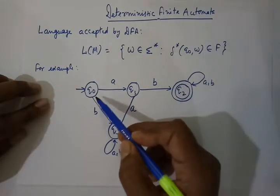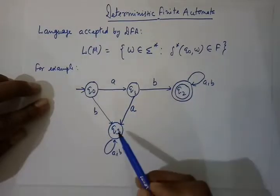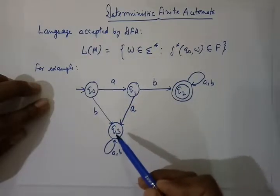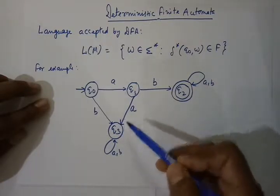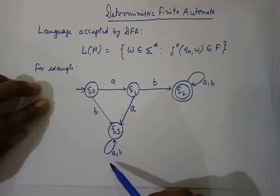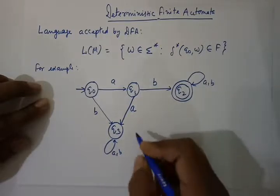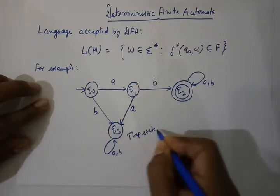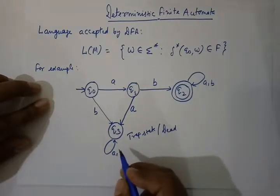After getting AB we start from start state, and if we get B first, then we come to Q3. From Q3 we cannot come out.